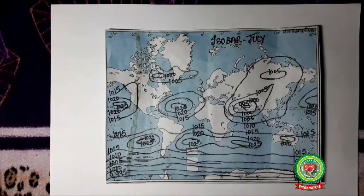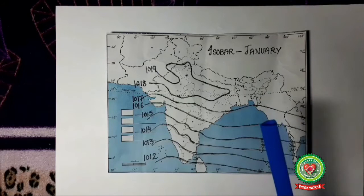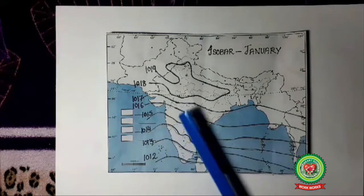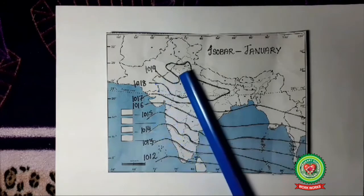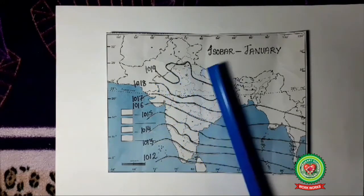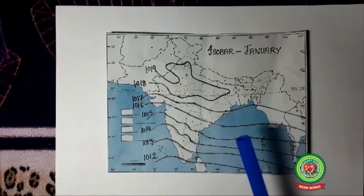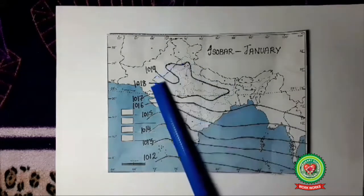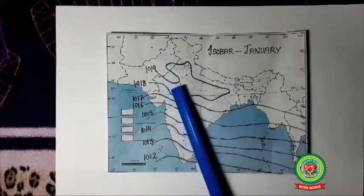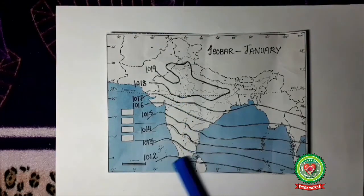In the January isobar map for India, the isobar values increase from south to north: 1012, 1013, 1014, 1015 — up to 1019 in the Thar Desert, Punjab, Haryana, and the northern plains. This shows the relationship between isobars and temperature: January is the coldest month for India, so northern India has very low temperature and higher pressure, but as we move towards the south the temperature becomes moderate and pressure decreases.